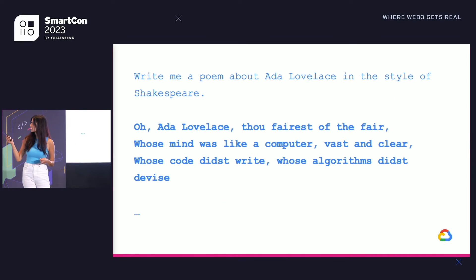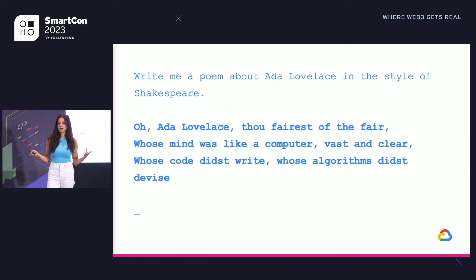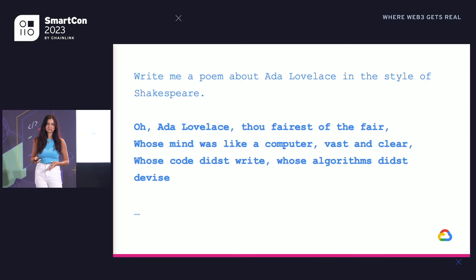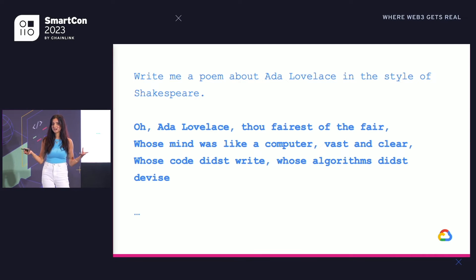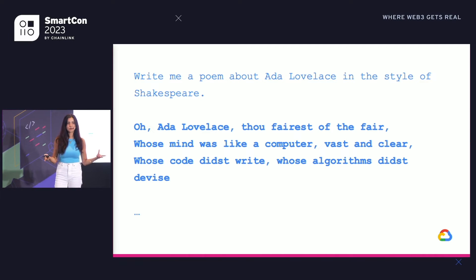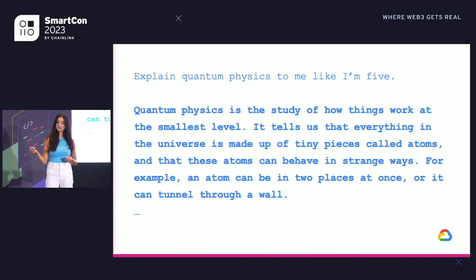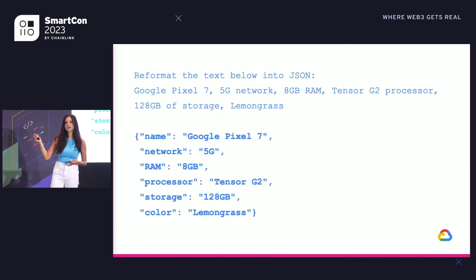We call this input text the prompt. Here's one way you might structure a prompt: write me a poem about Ada Lovelace in the style of Shakespeare. We take this text, send it to a large language model, and get back some beautiful poetics about Ada and her vast mind. This works pretty well because a lot of the large language models you're likely to use have gone through something called instruction tuning, where they're trained to respond to instructions. So you might see prompts like 'explain quantum physics to me like I'm five' or 'reformat the text below into JSON' — literally just telling the model what we want it to do.